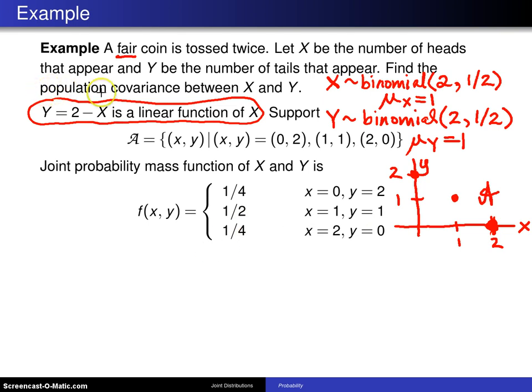What we want here is the population covariance. The covariance of X and Y is the expected value of (X minus its mean) times (Y minus its mean). The mean of X is 1. So this is (X minus 1) times (Y minus 1), where the mean of Y is also 1.